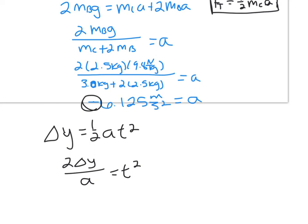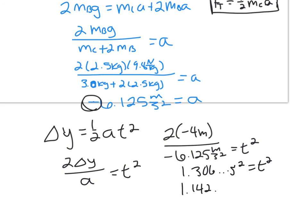We get 2 times negative 4 meters divided by negative 6.125 meters per second squared for t squared. And this is why I needed that negative here, because you can't take the square root of a negative number. 8 divided by 6.125 meters per second squared is going to give me 1.306 keeps on going seconds squared for t squared. Taking the square root of that number, we get 1.142 keeps on going seconds for t. So how long does it take this bucket to fall? T is approximately equal to 1.1 seconds.